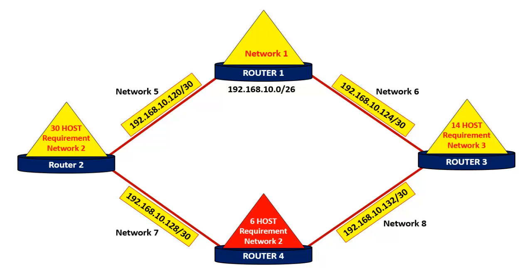It's time for the surprise test. According to this diagram, network number 1 is assigned with the IP address 192.168.10.0 with CIDR value /26. You have to find the IP address with the subnet mask for network numbers 2, 3, and 4. The requirement of network number 2 is 30 host IP addresses, network 3 is 14 host IP addresses, and network 4 is 6 host IP addresses. Try to find the answer and let me know in the comment section below. If you want to try more subnetting or VLSM quizzes, visit my website www.learnabhi.com or download our Android application Networking Plus. Check the link in the description section below.